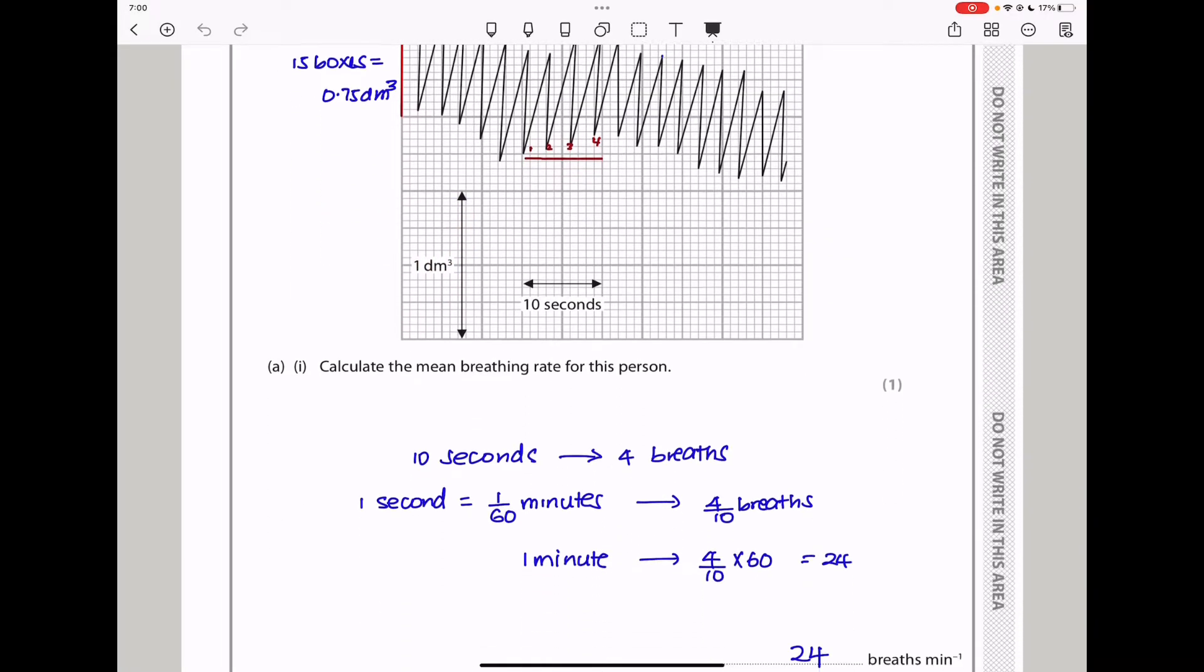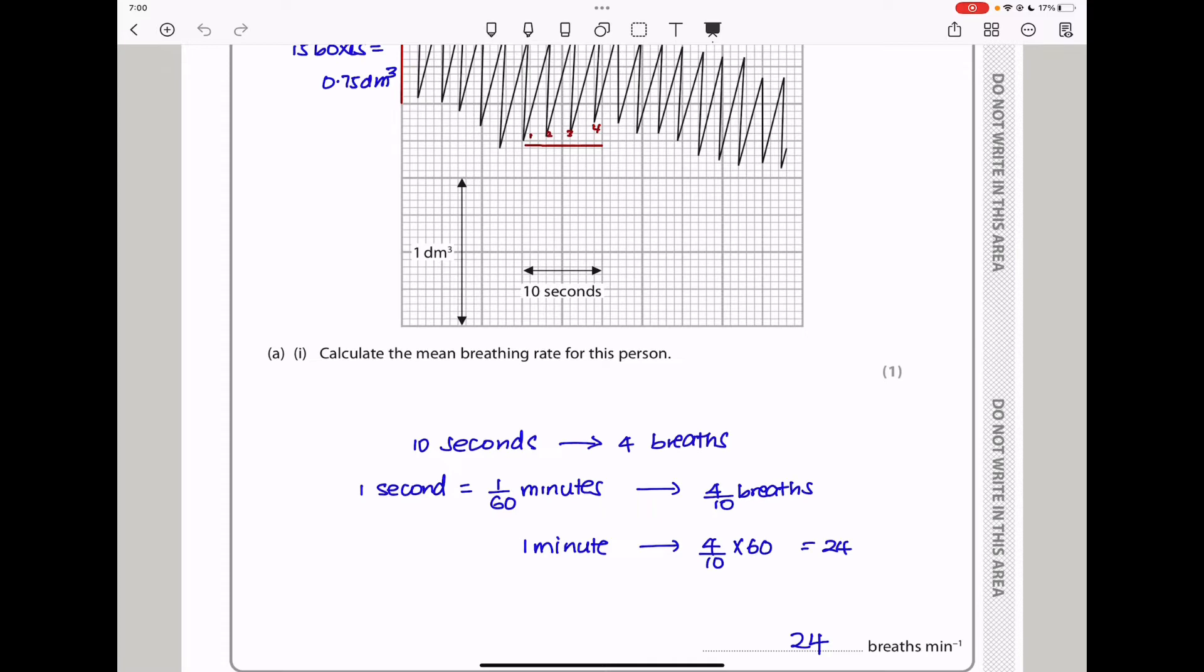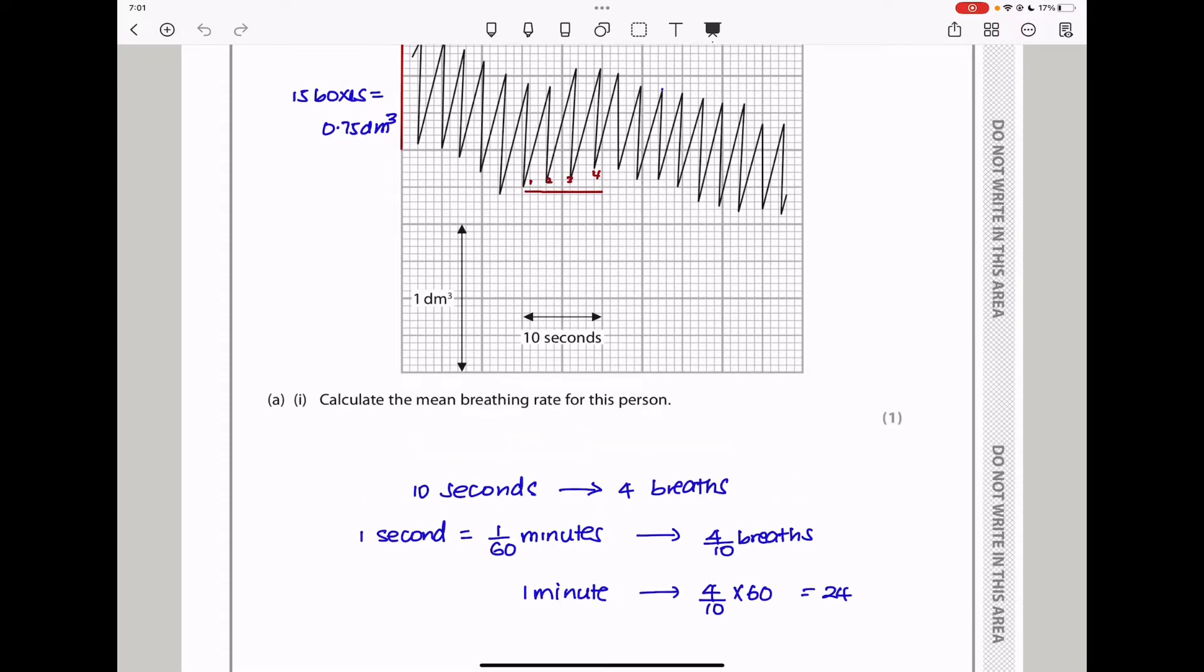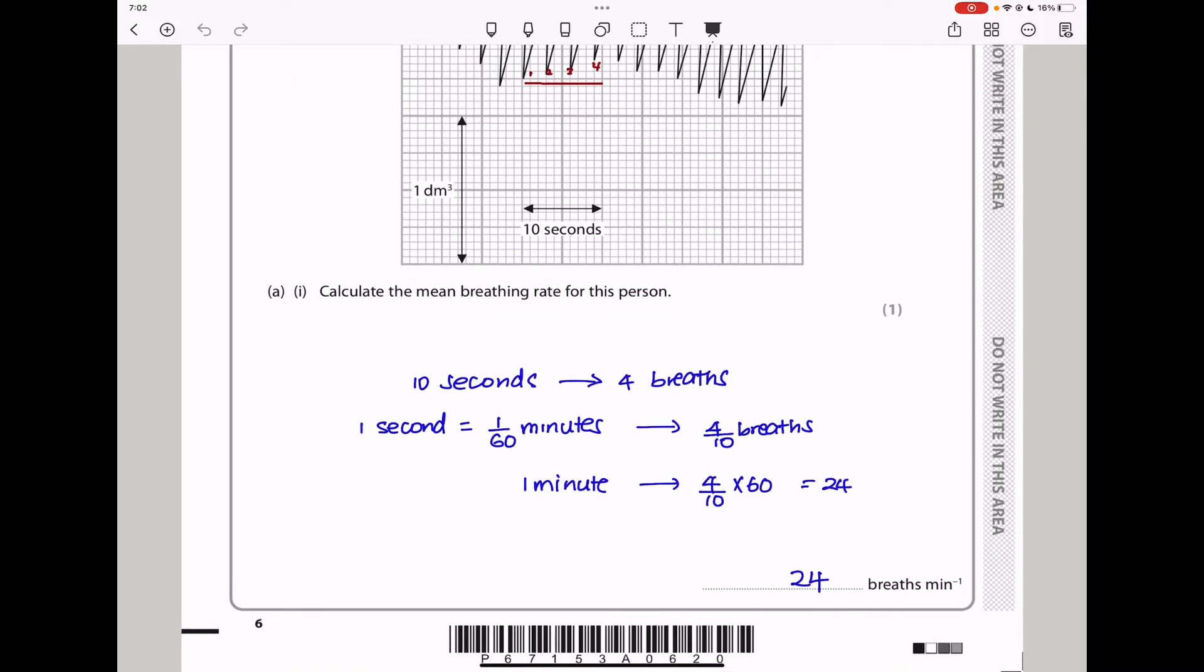So the first question says calculate the mean breathing rate for this person. I wanted to calculate the rate. So I used this line you can see here. We observed that there are four breaths in 10 seconds. And we know one second is equal to 1/60 minutes. And in 1/60 minutes, there are 4/10 breaths. Then 1 minute is equal to 4/10 times 60, which is equal to 24 breaths. So my answer is 24 breaths per minute.